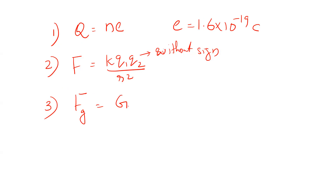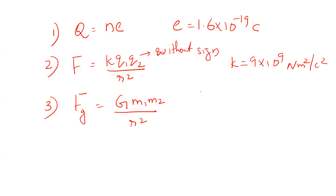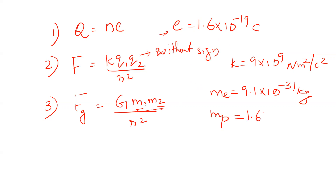The gravitational force formula is G M1 M2 divided by R². The electrostatic force constant K is 9 × 10⁹ Nm² per Coulomb². The charge of electron and proton is 1.6 × 10⁻¹⁹ Coulomb. The mass of electron is 9.1 × 10⁻³¹ kg, and the mass of proton is 1.67 × 10⁻²⁷ kg.